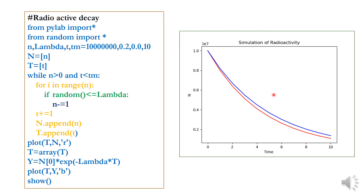The blue color represents the theoretical curve and the red color represents the simulated one. The simulated result is very close to the theoretical curve, and the exponential decay is clearly visible. If the initial number of parent nuclei N is increased to a very large value, the accuracy and similarity between the simulated and theoretical values improves further.